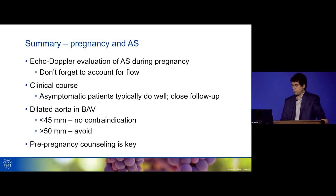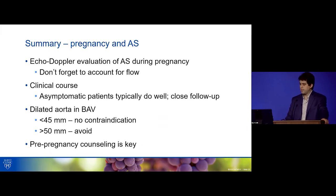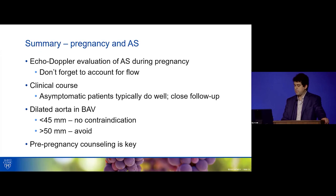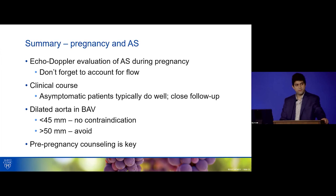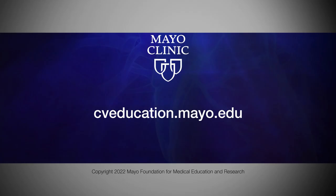In summary, regarding pregnancy and AS: when evaluating AS in the echo lab, don't forget to account for the high flow state of pregnancy. Asymptomatic patients do well even if severe AS is present, but close follow-up is essential. For the dilated aorta: avoid pregnancy if greater than 50 mm, proceed if less than 45 mm, and individualize in the 45–50 mm range. Most importantly, pre-pregnancy counseling is always the key.